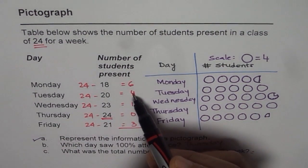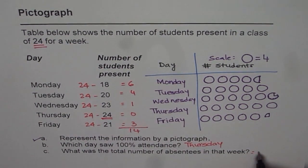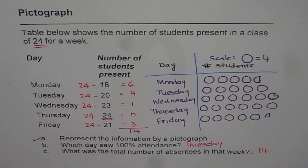Let's add them up: 6 and 4, 10 and 1, 11 and 3, 14. So that week total absentees were 14. So that is how we can answer the questions from the given data.